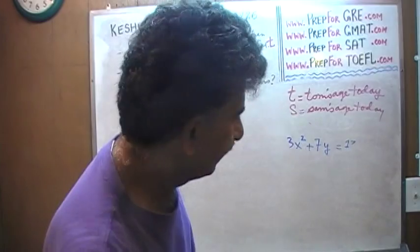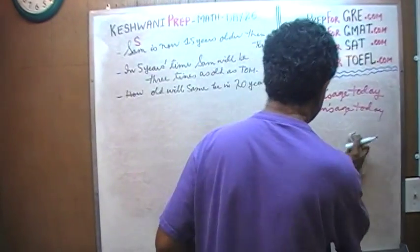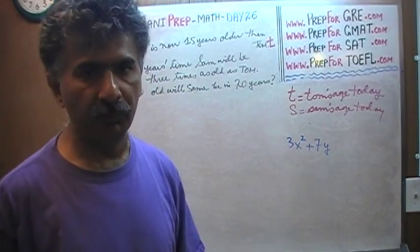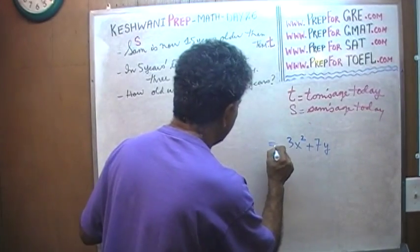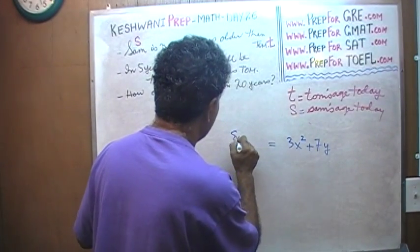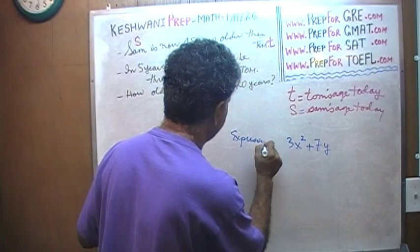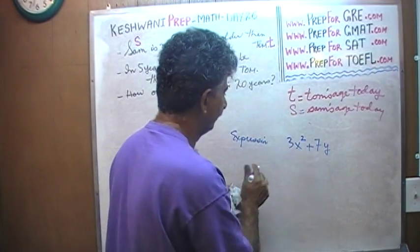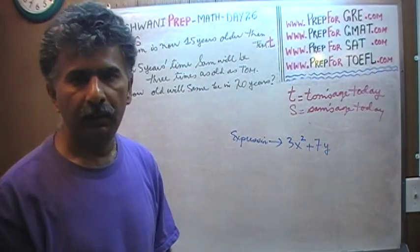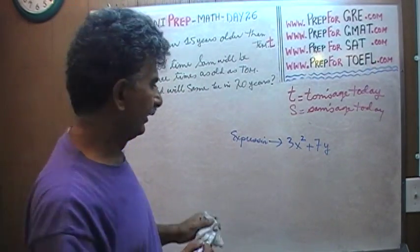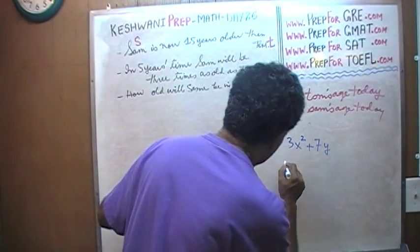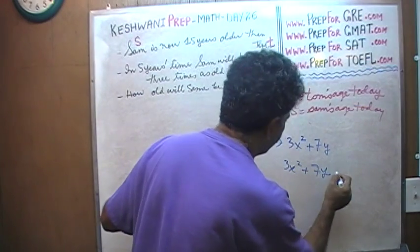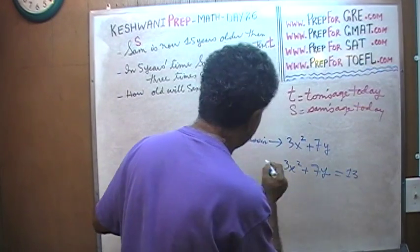For example, 3x squared plus 7y — is that an equation? No. It is an expression. An equation has to have an equal sign in it. This is an equation.